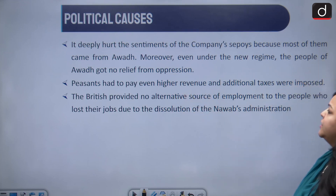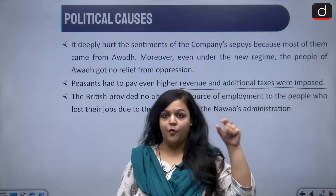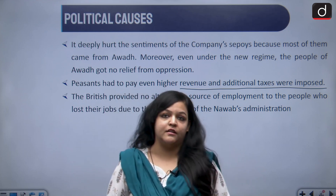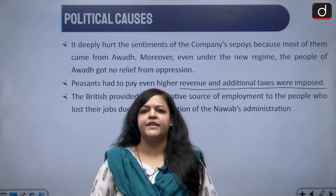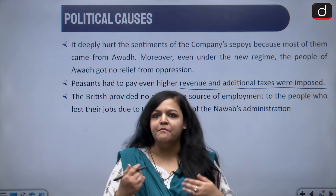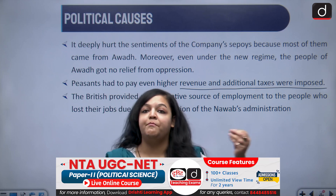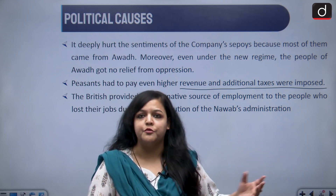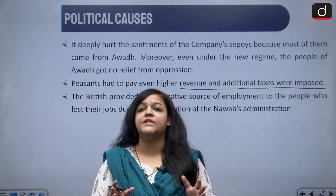Peasants had to pay higher revenue and additional taxes were imposed. When Avadh was annexed, a summary settlement was imposed — a revenue settlement similar to the Permanent, Ryotwari, and Mahalwari systems. Under this settlement, around 75 percent of individuals' income was charged as revenue. Imagine being a soldier laying down your life for the government while your parents are dying of starvation because all their money is taken as revenue.